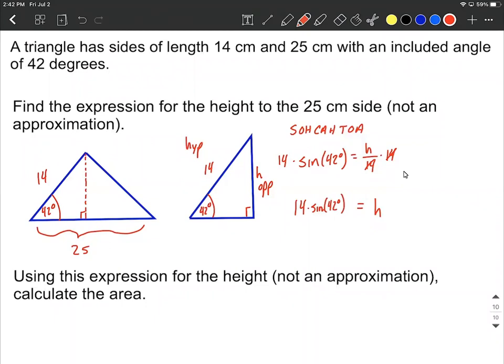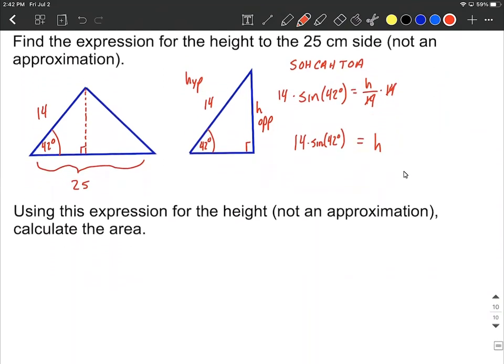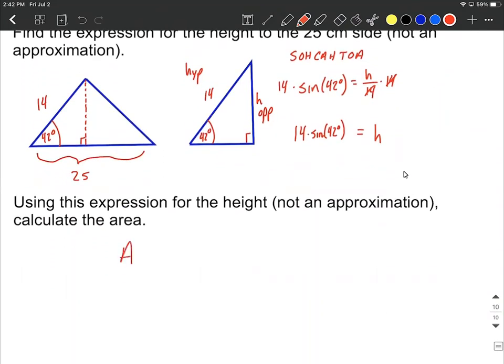Next, we want to use this expression for the height and calculate the area. So the area of a triangle, as we should know at this point, is going to be one half multiplied by base, multiplied by the height. So looking at our left triangle, we can say our area could be one half multiplied by the base is going to be 25 to go all the way across this triangle.